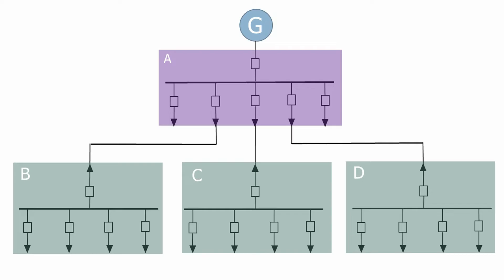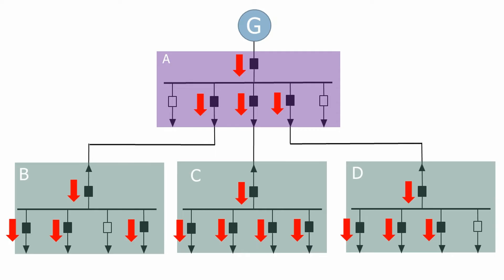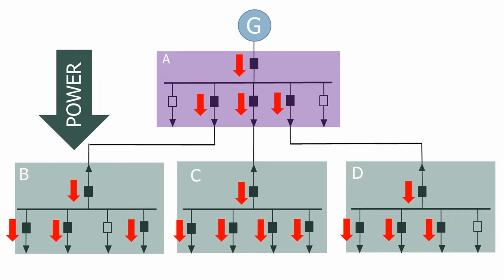Here we have a typical network with generators inside a power station at the top supplying power to the main feeder station, Substation A. This then feeds power to all of the other substations of the transmission network — Substations B, C, and D. Once the circuit breakers are closed, power flows from the generator through the main substation, through the feeders, and onto the individual substations which feed the loads. This is normally called a split system, as all the individual substations are fed separately from the main source of power.